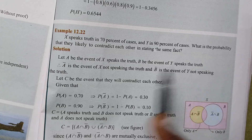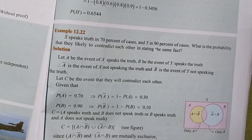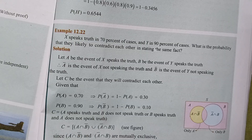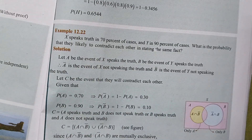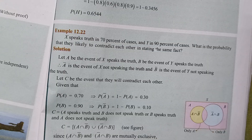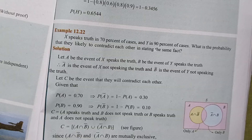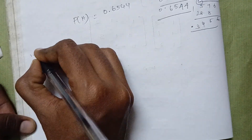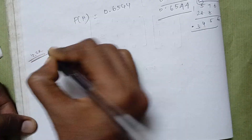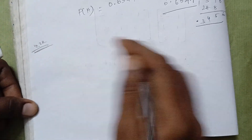If you ask one another, they will say one another — that is what contradicts. If they say different things from one another, that is a contradiction.